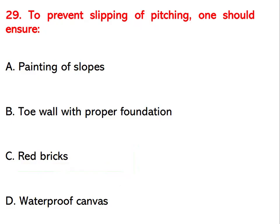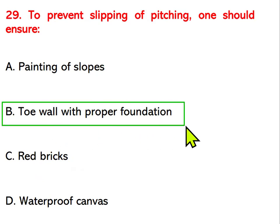To prevent slipping of pitching, one should ensure which measure? Options are painting of slopes, toe wall with proper foundation, red bricks, or waterproof canvas. The right answer is toe wall with proper foundation.